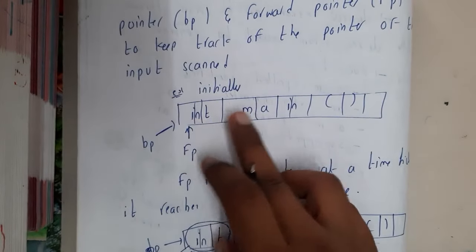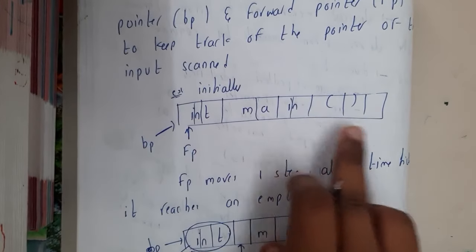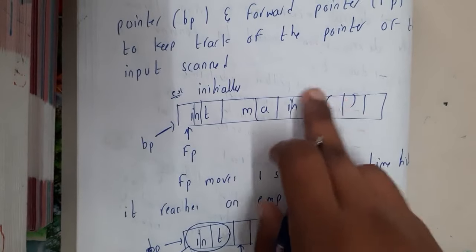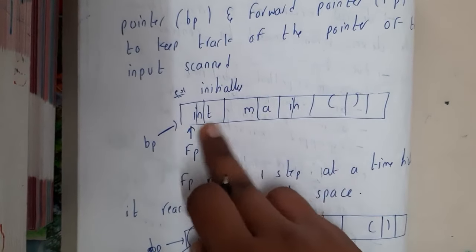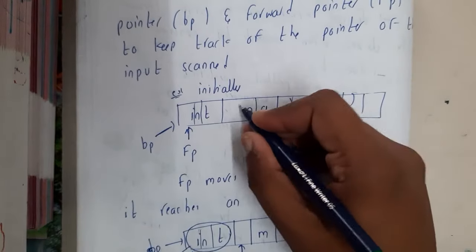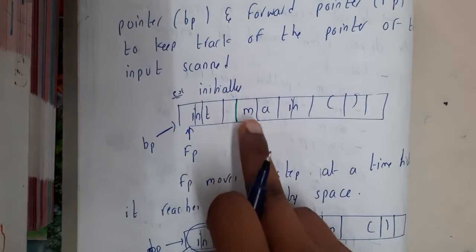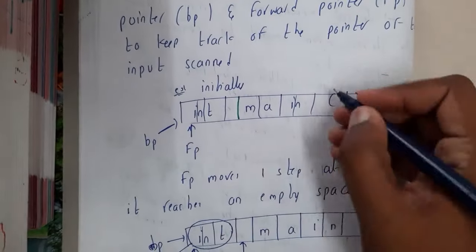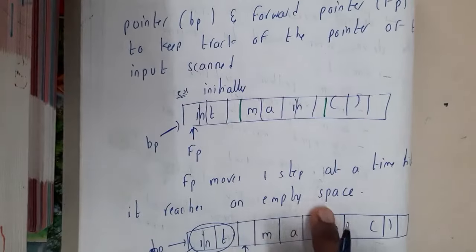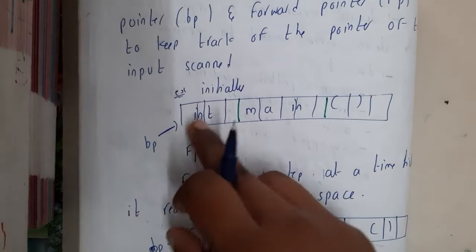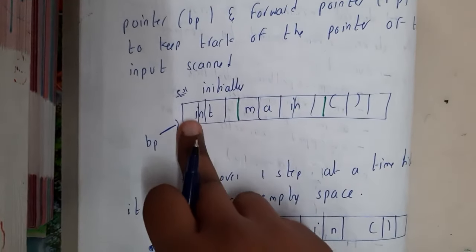If you take a small example: int main open bracket closed bracket. Initially both pointers will be starting from i or the start point. The forward pointer will first move to n, then to t, and then to the empty space.